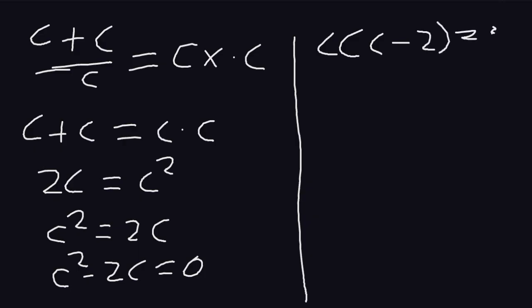For the first value of c, c1, it shall be 0. Then for c2, we equate this one to 0, so we have c minus 2 is equal to 0.